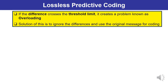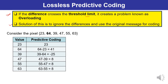There is an important problem to note: if the difference crosses a threshold limit, it creates a problem known as overloading. The solution to this problem is to ignore those differences and use the original message for coding. Let us understand this with an example using 6 pixels.